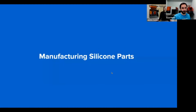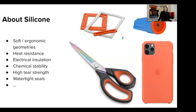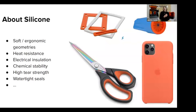First, a little introduction on silicone parts and how to manufacture silicone parts. Silicones are a class of polymers that contain the elements silicon and oxygen, and they transform from a gel or liquid to a highly flexible and stretchable solid after a curing process. They are a very popular material because they are very versatile, with many high performance properties — including soft ergonomic geometry, very good heat resistance, electrical insulation, chemical stability, high tear strength, and watertight seals.